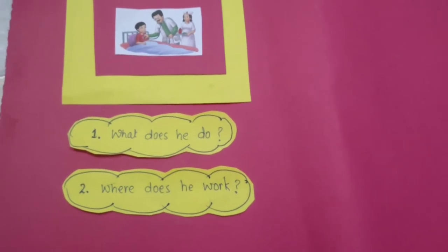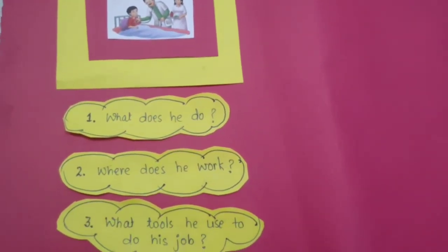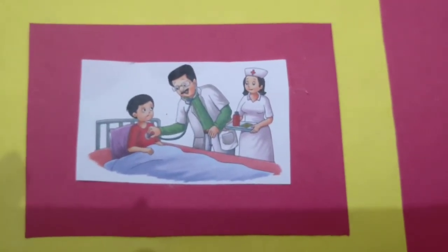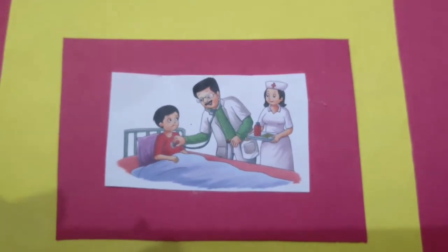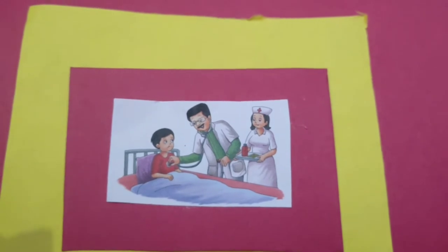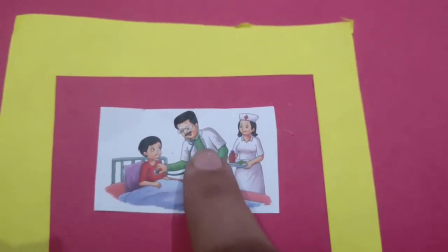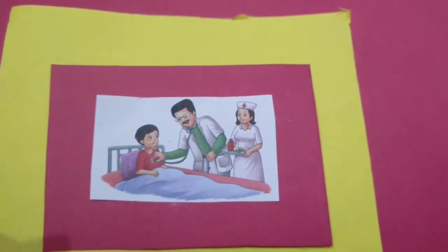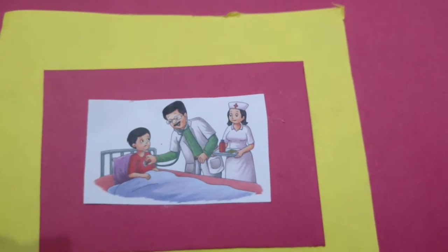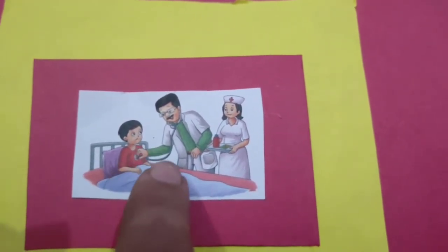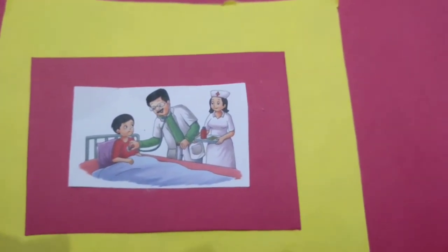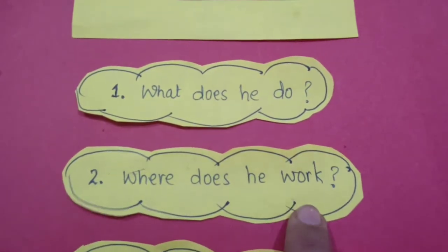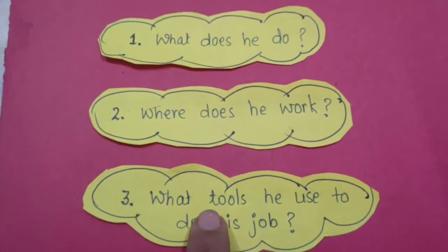Now I am taking the third question. The third question is: what tools does he use to do his job? Can you tell me what does a doctor use to do his job? You should know the spelling of two of the tools of the doctor. What is he using here? Can you guess what is this? Stethoscope. So we can make another sentence — the third sentence: a doctor uses a stethoscope to do his job. Similarly, all community helpers work at a place; there is a name for that place and they use some kind of tools.